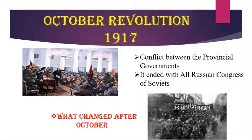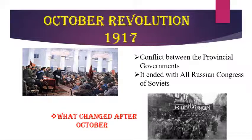Next point: what changed after the October Revolution 1917? Some changes that occurred during that time: first, private property was opposed. Second, industries and banks were nationalized. Then land was declared social property. Old titles of aristocracy were banned. Then large houses were divided as per family requirements. Lenin dismissed the assembly after failing to gain majority and support in elections to the Constituent Assembly, and Russia became a one-party state.